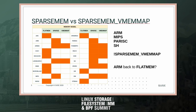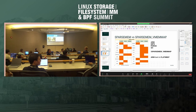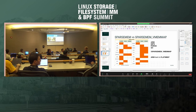Mike suggests another possibility: ARM can do FlatMEM that is effectively like SparseMem — it allocates from memblock and then frees the middle, creating FlatMEM with holes in the memory map. So you get a FlatMEM memory model with properties of classic SparseMem. Maybe it's possible to do the same for MIPS or PA-RISC, though he's not certain.